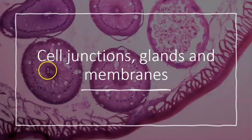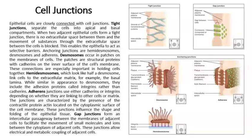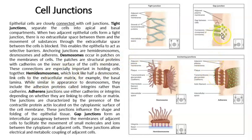The next topic is cell junctions, glands, and membranes. Cell junctions are connections in between cells. The main cell junctions are tight junctions, desmosomes, gap junctions, and hemidesmosomes. These cell junctions not only allow the cells to get together, but they have other functions — for example, some look like pores and allow things to pass through between cells.